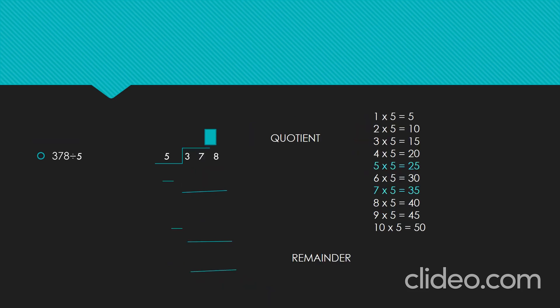Let's see one more example based on remainder sums. Here, the first leftmost digit of the dividend is 3, which is less than 5. So, we have to take 2 digits — that is, 3 and 7, which is 37. Now, let's find the product that is nearest or less than 37 by using the tables of 5. Here, 7 five's are 35. Let's write 7 in the tens place of the quotient and 35 below 37. Let's subtract 35 from 37 — we get 2.